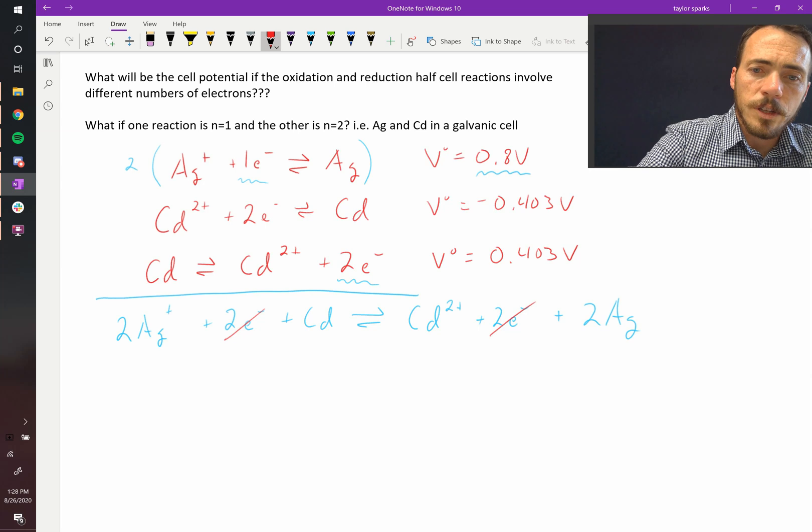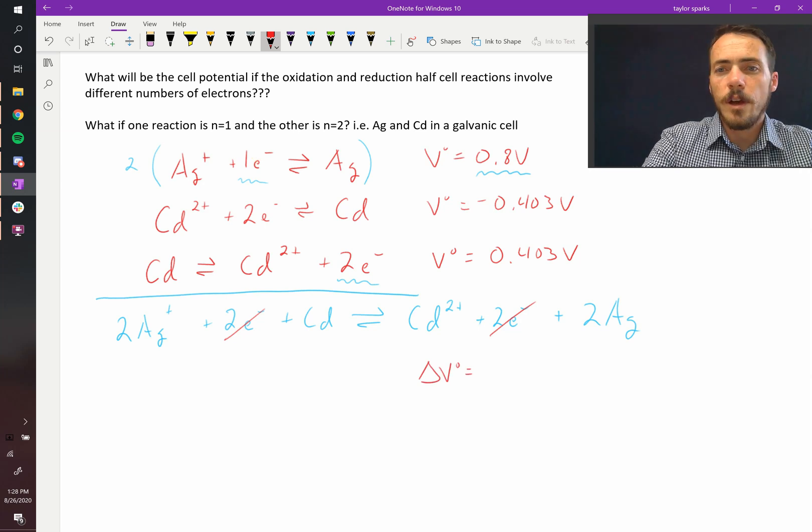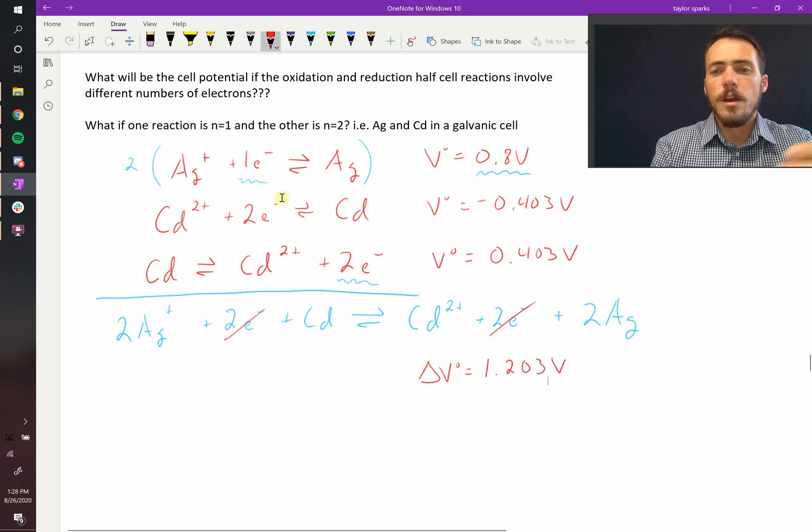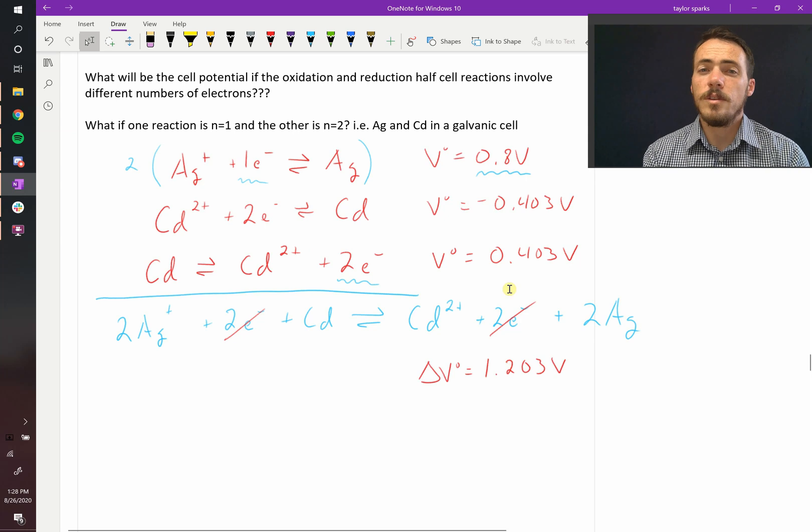The overall cell potential, ΔV°, is going to be equal to those two values added together, which I see as 1.203 volts. The fact that it's positive tells us that we did this correctly. That means this is a spontaneous reaction.